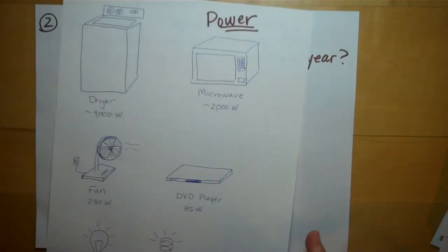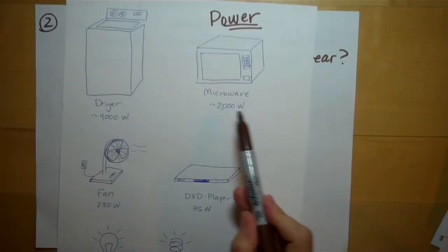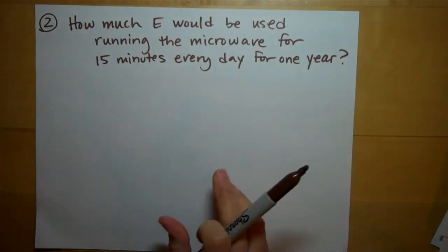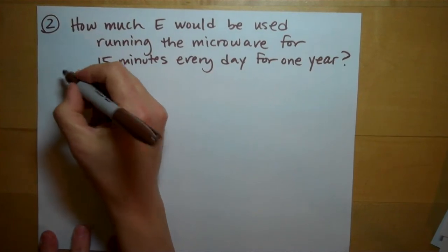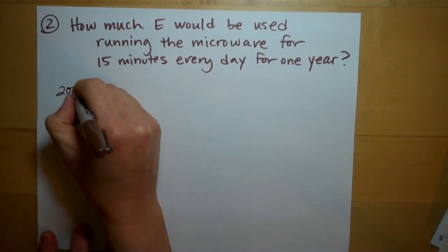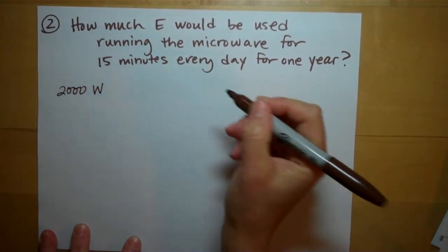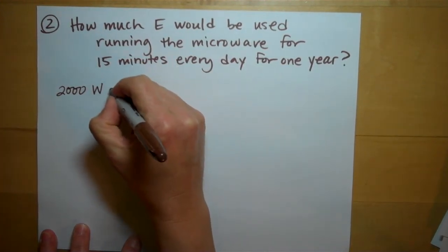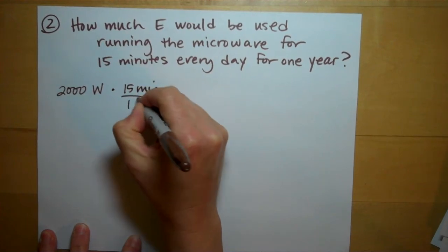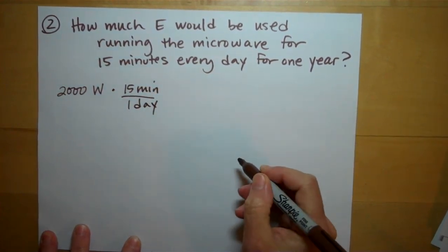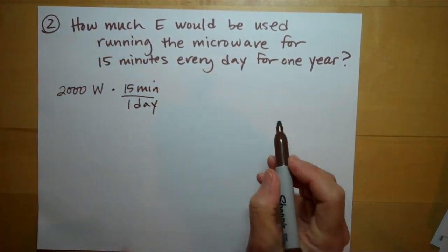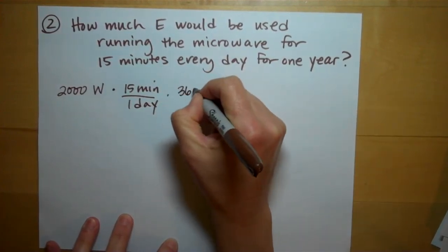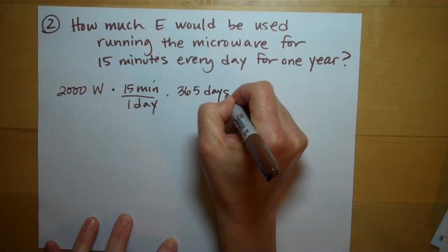Well, again, you'd be given, and the problem you'd be given, and we'll use 2,000 watts of power. So our microwave uses 2,000 watts of power. We're running it for 15 minutes. So multiply by 15 minutes every day. We're running it. And we have to run it for a whole year, which is 365 days in one year.